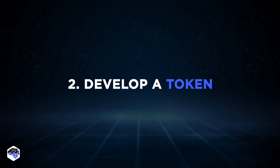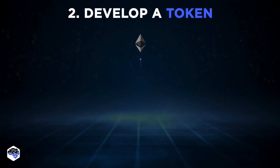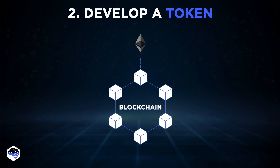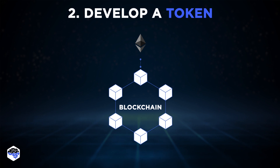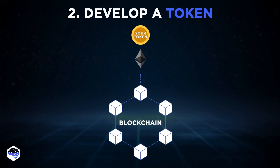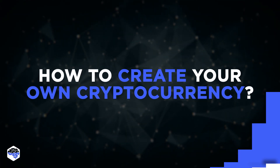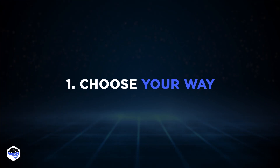The second way is to develop a token. A fork cryptocurrency is based on top of the existing blockchain, using the mechanism of trust, popularity, and consensus of the underlying technology. When you build a token on top of a secure blockchain like Ethereum, your token runs on a secure network that is immune to fraudulent attacks.